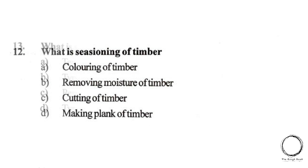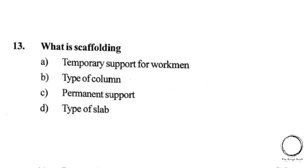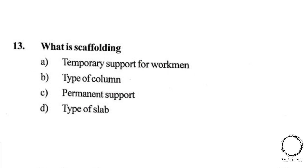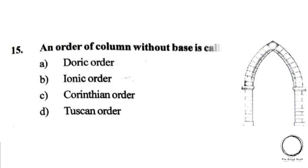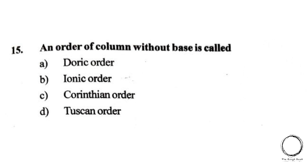Next: what is scaffolding? Options: A) Temporary support for workmen, B) Type of column, C) Permanent support, D) Type of slab. The right answer is A, temporary support for workmen. Next: identify the type of arch shown in the image. Options: A) Pointed arch, B) Ogee arch, C) Triangular arch, D) Segmental arch. The right answer is A, Pointed arch.